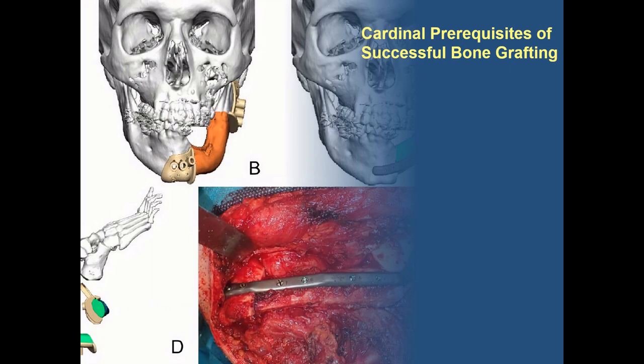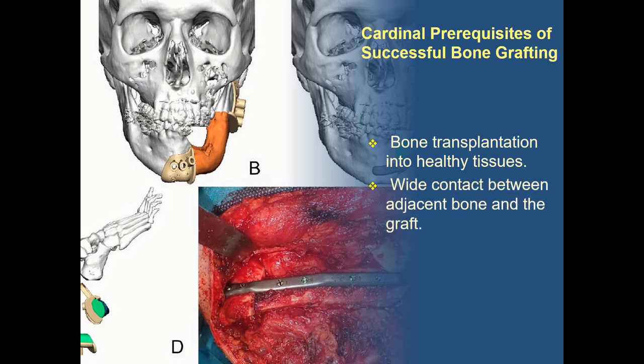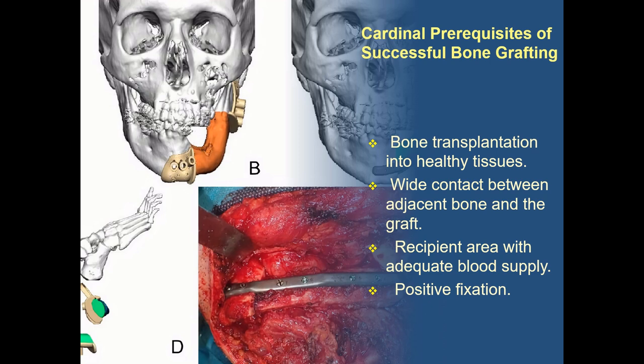The cardinal prerequisites of successful bone grafting, outlined over 40 years ago by Kazanjian, remain of paramount importance today. These include bone transplantation into healthy tissues, wide contact between adjacent bone and the graft, a recipient area with adequate blood supply, and positive fixation and stabilization of bone with reconstruction plates, screws, etc.